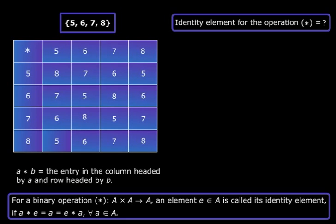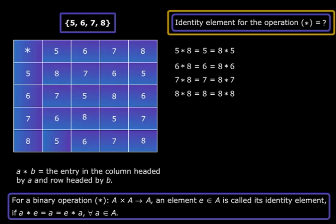Now look at the binary operation table. Let me write down a few expressions there: 5 star 8, that equals 5, that in turn is equal to 8 star 5. 6 star 8, that equals 6, that in turn is equal to 8 star 6. Similarly I have written two other expressions. So what can you say now? Is there any identity element? Yes, that is 8 for the binary operation star.